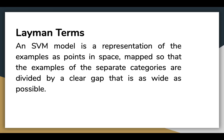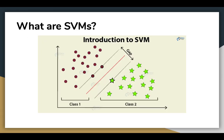Let's visualize this. In this graph, we can see that the two classes are separated by the largest gap possible. The space between the red line and the closest point to the red line is called a margin.